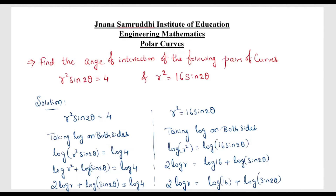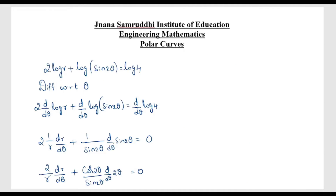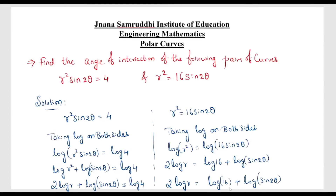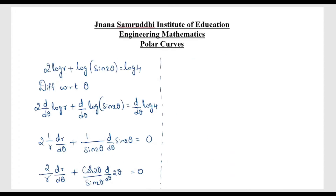Now we perform the same differentiation for the second curve. The last line from applying logarithm was: 2 log R = log 16 + log(sin2θ). We now differentiate with respect to θ.